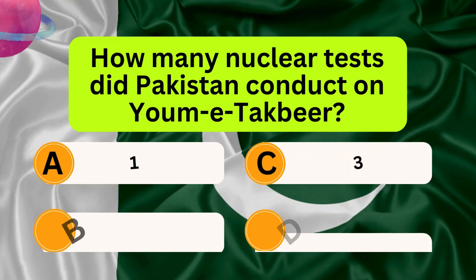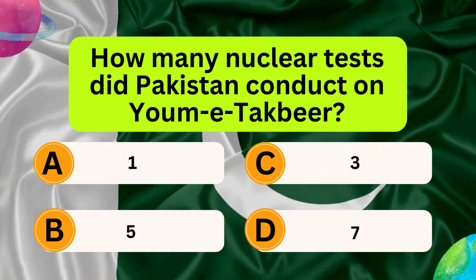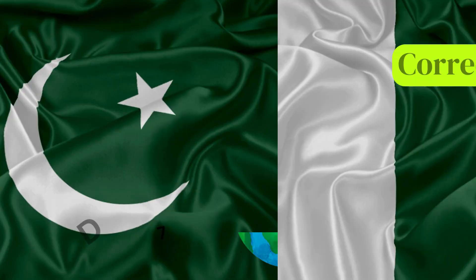How many nuclear tests did Pakistan conduct on Jami Takbir? Options: 1, 3, 5, 7. Correct answer is 5.